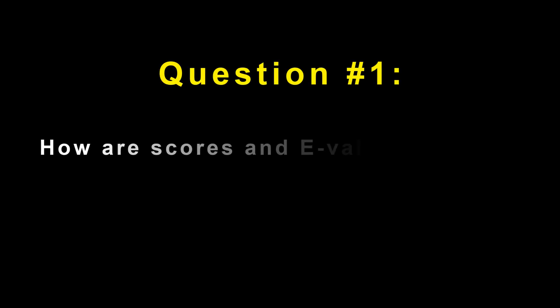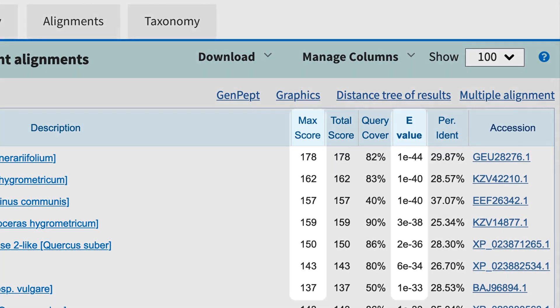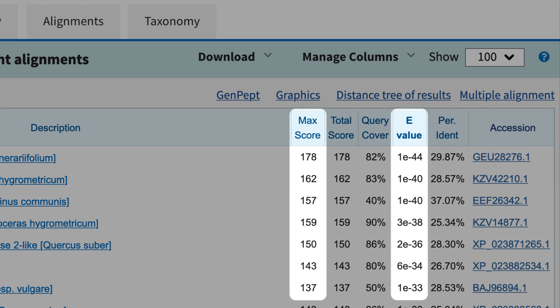Question number one. How are scores and E-Values related? In simple terms, the higher the score, the lower the E-Value. This makes sense in light of the simple definition of E-Value, the number of hits you expect to see by chance.